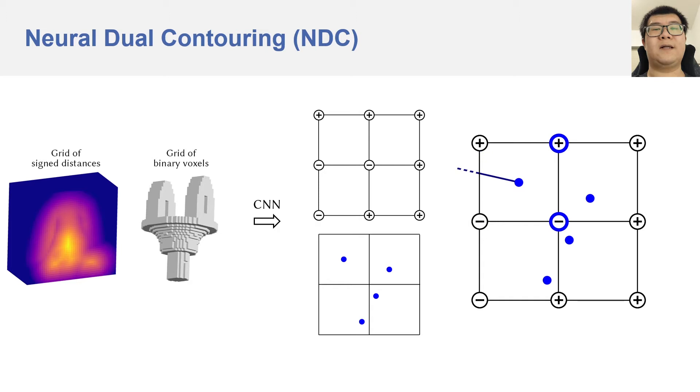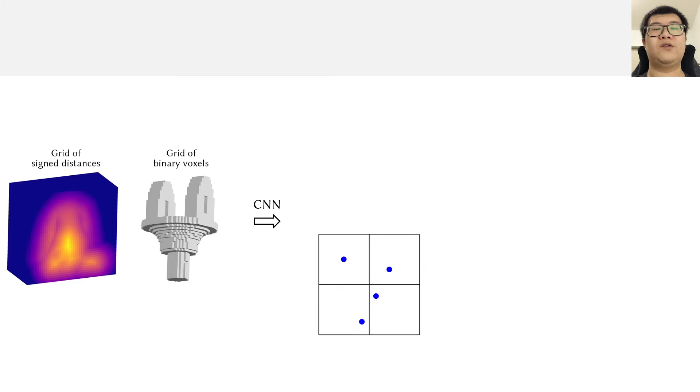Furthermore, note that the meshing algorithm of dual contouring only needs to know whether the edges are intersected by the output surface or not. Whether the signs are positive or negative doesn't matter. Therefore, we also introduce a sign-agnostic version of our method, which we name unsigned neural dual contouring, or UNDC for short.